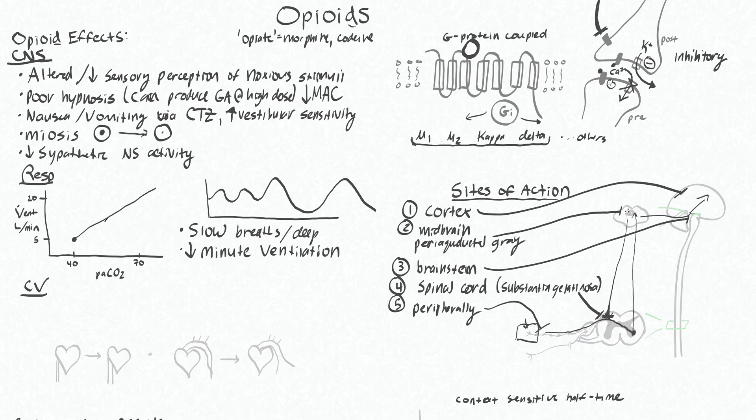So your minute ventilation will increase in order to try to lower your Pa CO2 back to 40. So that's with no opioids.